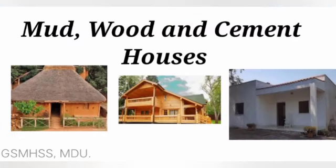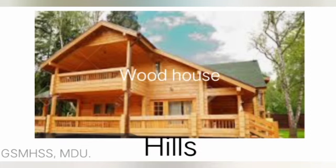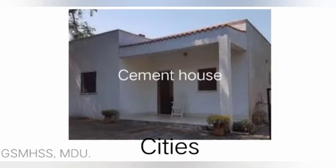People build their houses using different types of materials like mud, wood, and cement. They choose the materials based on what is available where they live, or whether the place is hot or cold. Mud houses are found in the desert of Rajasthan where it is very hot. Wood houses are mostly found in cold places in the hills like Shimla and Manali. Cement houses are found mostly in towns and cities and can be either tall buildings or a bungalow.